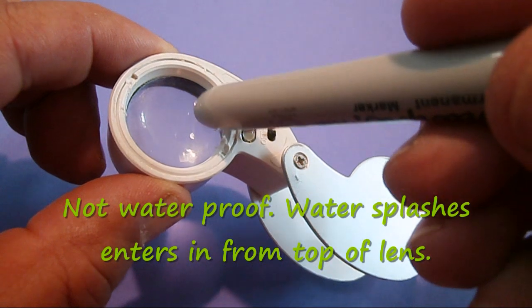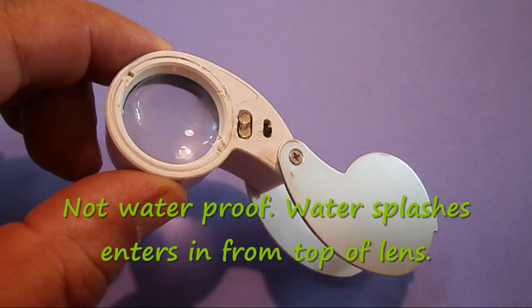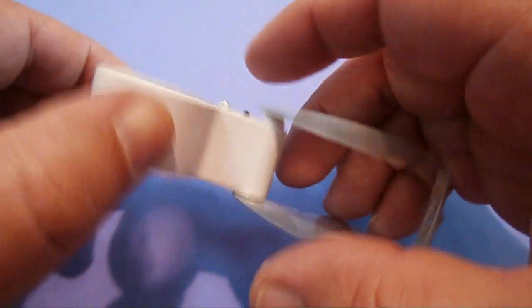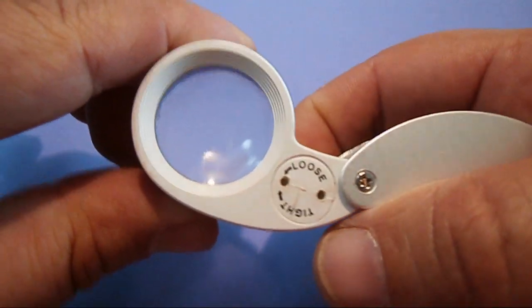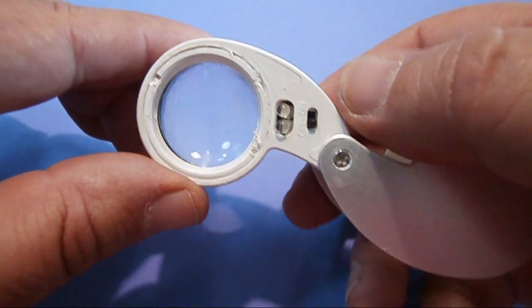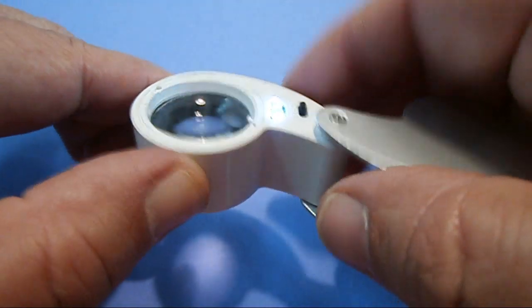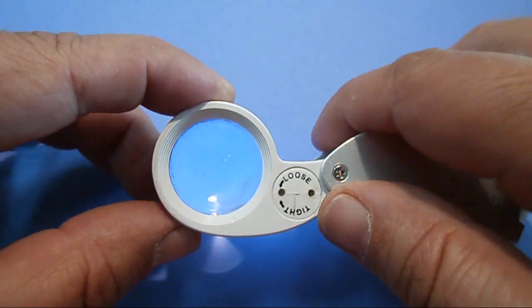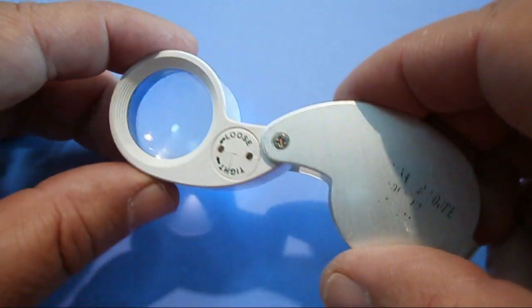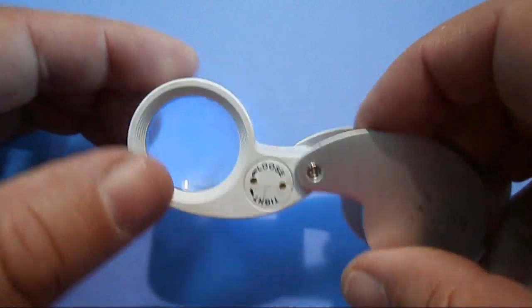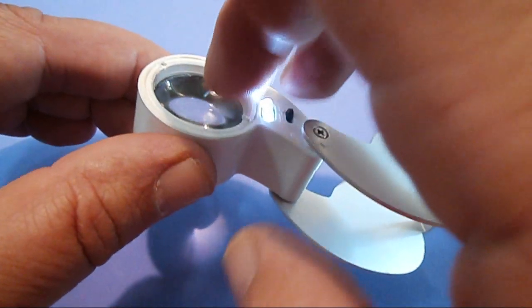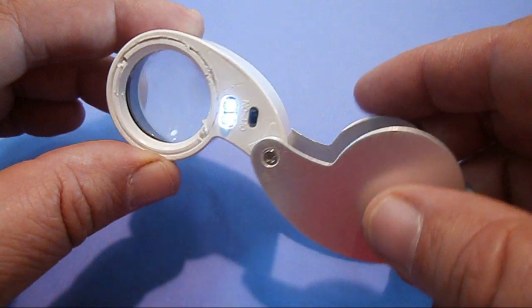When you're a gem cutter, you're dealing with water, which means water can spray onto a loop. With these cheap loops, they're not waterproof. If you get a drop of water on the lens, it can seep into the interior and you can't get it out. I tried opening this loop and couldn't open it. The batteries last about a couple of weeks if you use them regularly and the lenses are plastic.